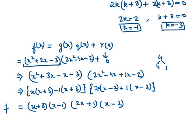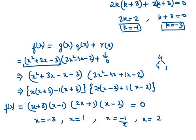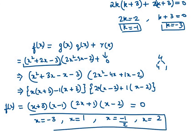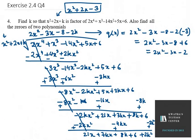Setting f(x) = 0, we get four zeros: x = −3, x = 1, x = −1/2, and x = 2. Since the polynomial has highest degree 4, we correctly obtain four zeros. Thank you for watching this video — please like, share, and subscribe to my channel.